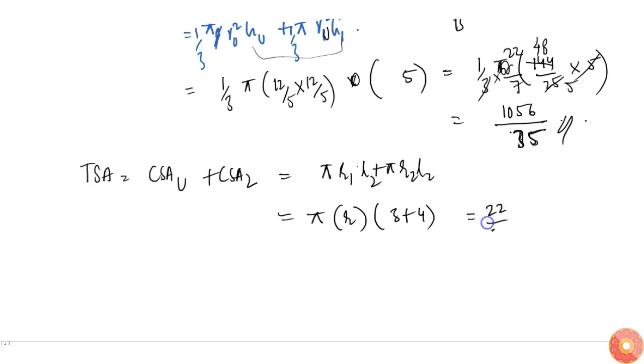So finally I get this is equal to 22 by 7 into r is 12 by 5. 7 gets cancelled. 22 into this is 264 by 5 square centimeters, this is centimeter cube.